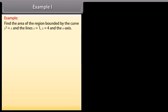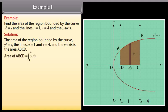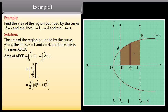Example 1: Find the area of the region bounded by the curve y² = x and the lines x = 1, x = 4, and the x-axis. The area of the region bounded by the curve y² = x, the lines x = 1 and x = 4, and the x-axis is the area ABCD. Area ABCD = ∫ from 1 to 4 of y dx. By solving, we get area ABCD = 14/3 square units.